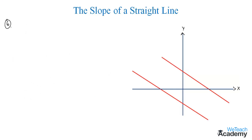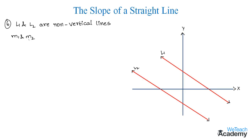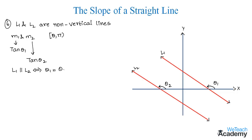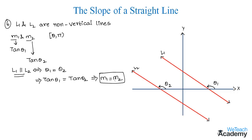Consider the next case where l1 and l2 are two non-vertical straight lines with slopes m1 and m2. These lines make angles theta1 and theta2 with the x-axis in the interval (0, π), such that m1 = tan theta1 and m2 = tan theta2. Then l1 is parallel to l2 if and only if theta1 = theta2. Applying tan on both sides gives tan theta1 = tan theta2, that is m1 = m2. Therefore two lines are parallel if and only if their slopes are equal.